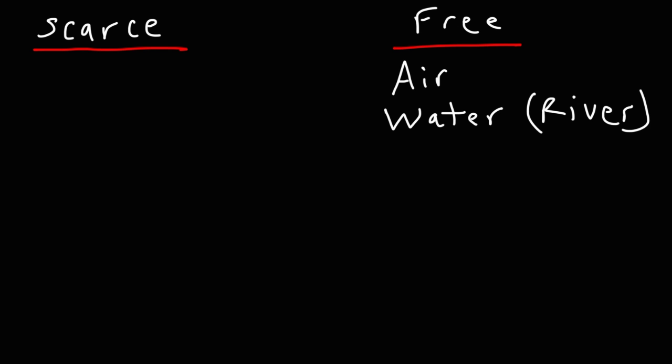Now let's say if you're living in a desert — in that location water would be considered a scarce resource, because you could die if you don't drink water. And if you meet somebody that has water, you might be willing to pay more than two dollars for a bottle — you might pay ten or twenty dollars — because in that location water is considered a scarce resource.